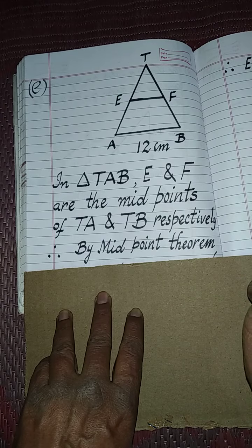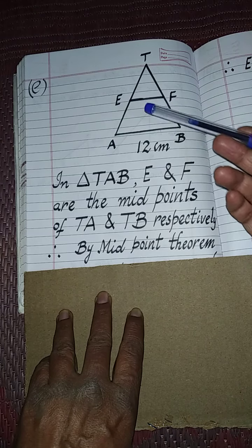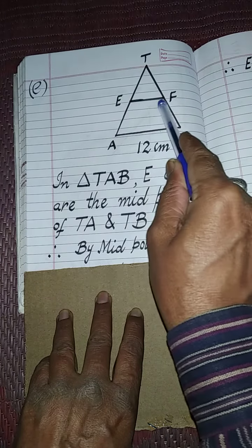So two results we can get from midpoint theorem. Here parallel is not required to check, only we will have to see if this is 12, what will it be.